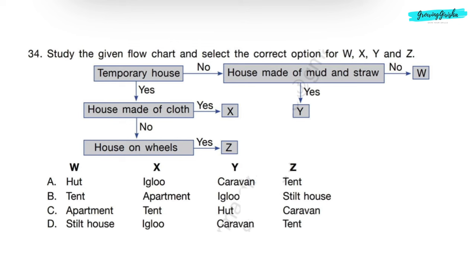Now, we'll find out Y. Temporary house? No. House made of mud and straw? Yes. Means Y is hut.